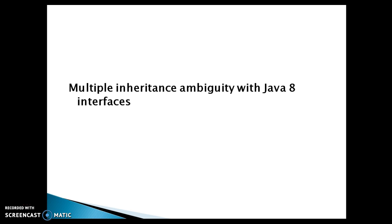As you know, from Java 8 onwards you can define a method inside interfaces. So let's say if you have a class that implements two interfaces like interface one and interface two, and there is a common method available in these two interfaces, then how this ambiguity is going to be resolved in Java 8 — that's what we are going to discuss in this video tutorial.